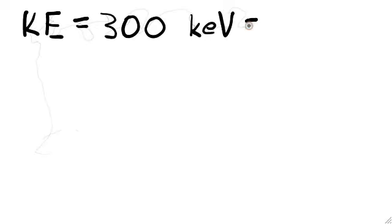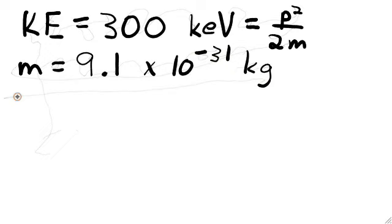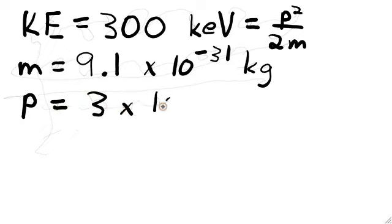We can use this equation to understand the incredible resolution of an electron microscope, which also provides us with a nice exercise in unit conversion. The kinetic energy of electrons in an electron microscope is something like 300 keV, kilo electron volts. And we know that the kinetic energy formula is that this is p squared over 2m, momentum squared over twice the mass. The mass of an electron is about 9.1 times 10 to the minus 31 kilograms.